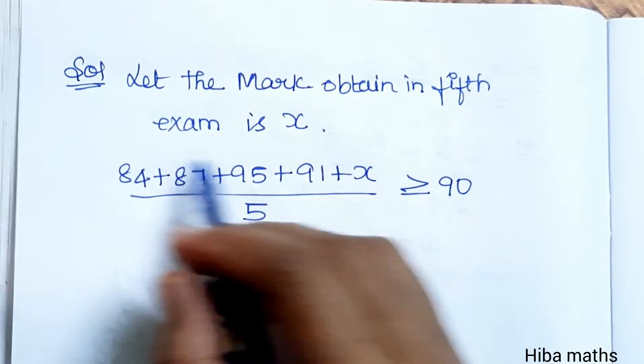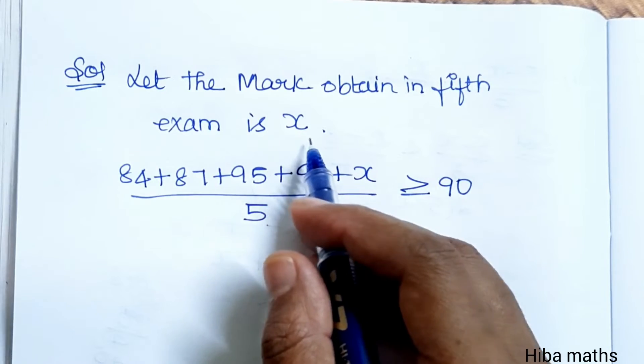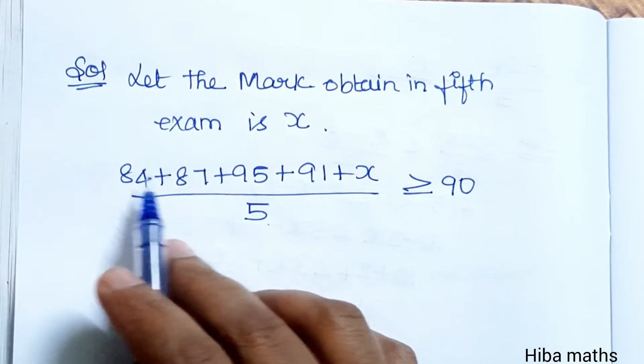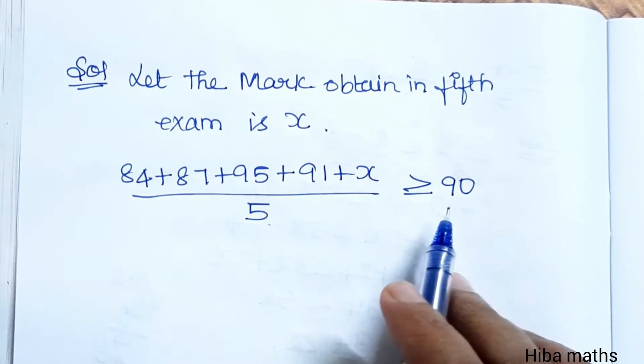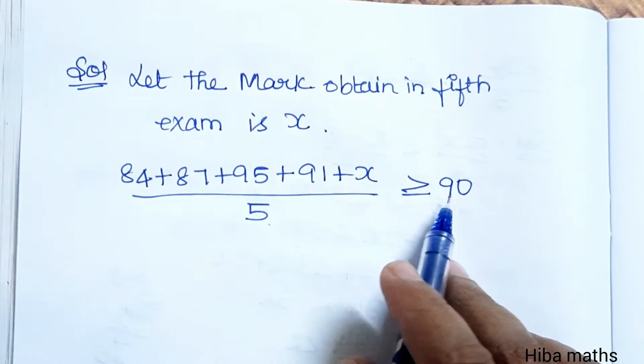In the solution, let the mark obtained in the 5th exam be x. Now, if we put the average, add 5 subjects' marks, divide by 5. The answer is greater than or equal to 90.